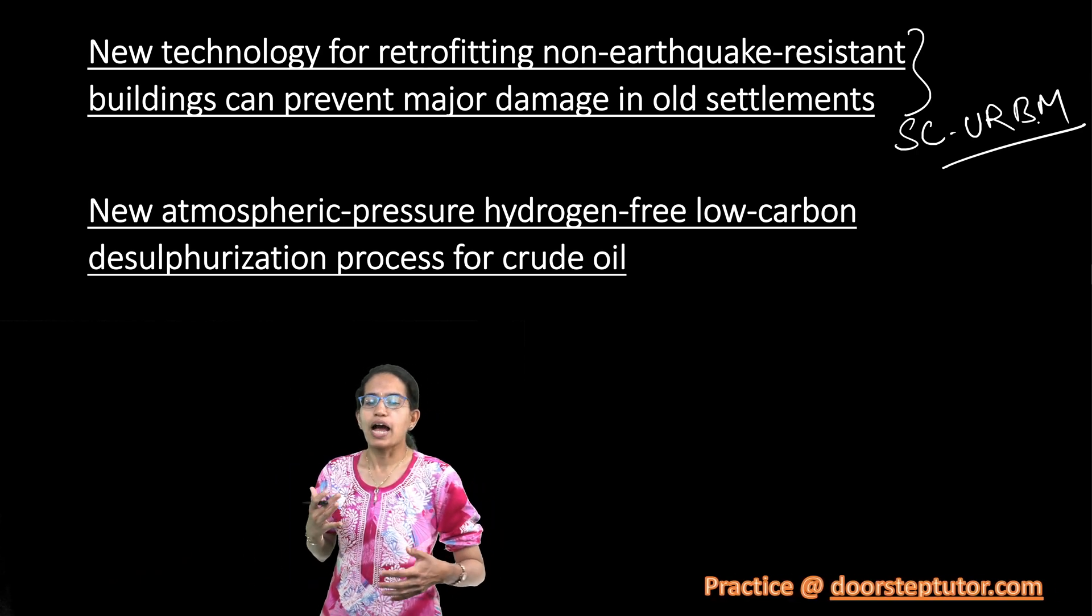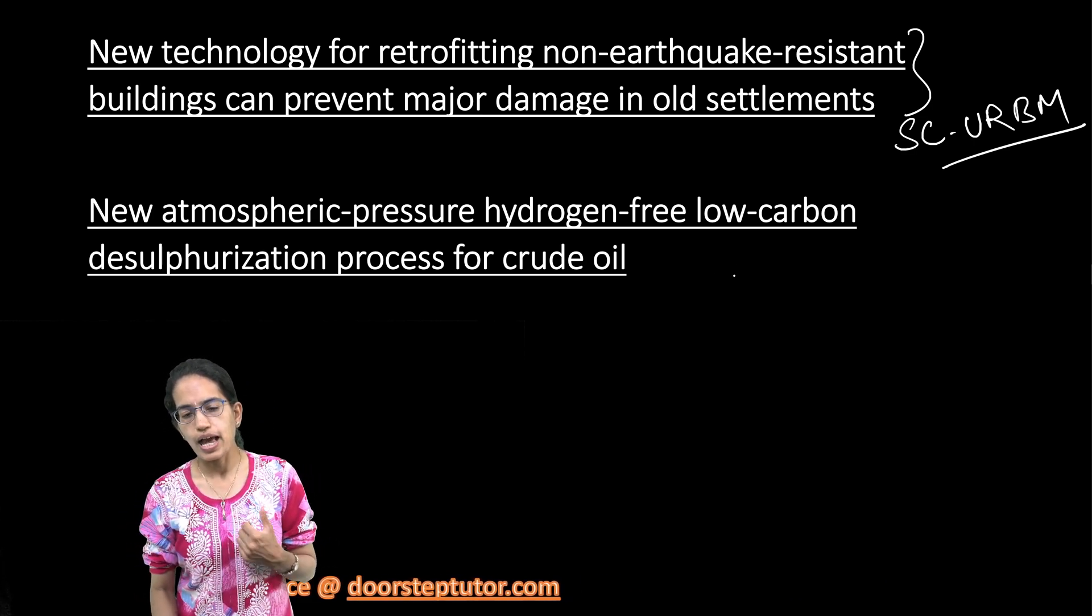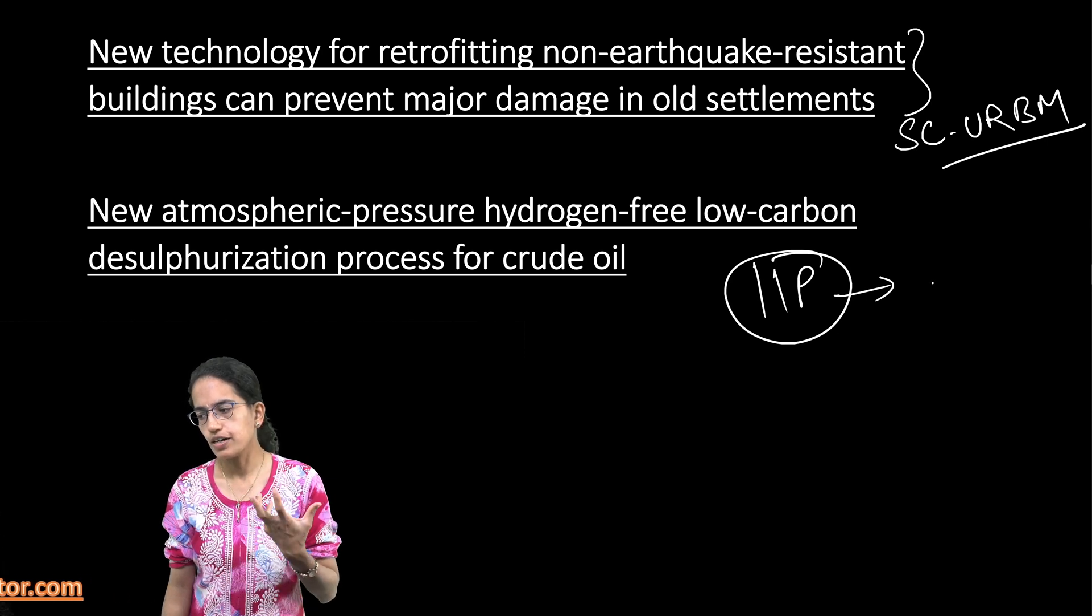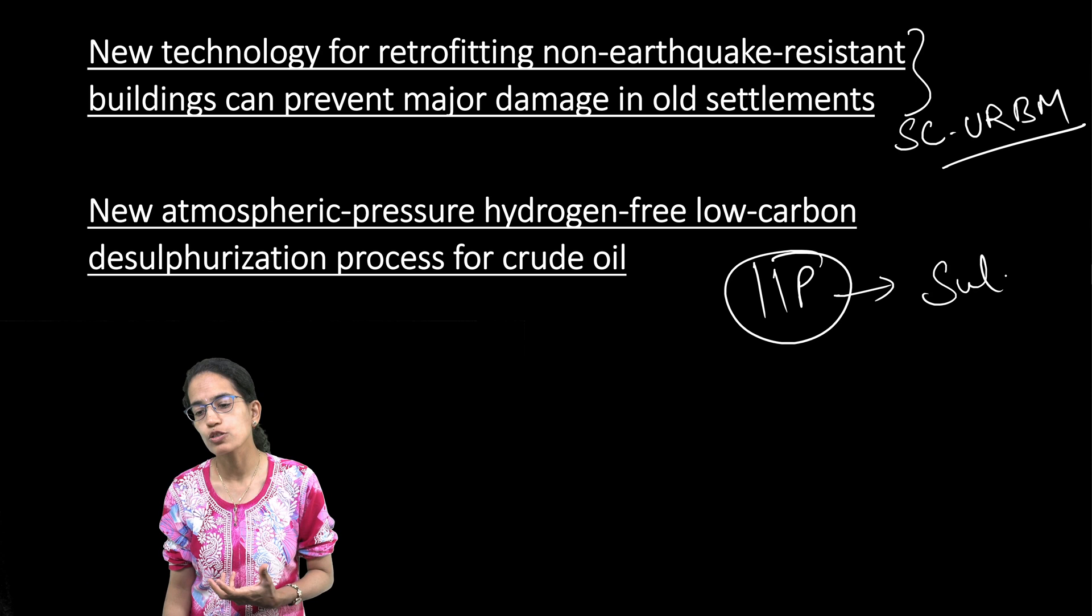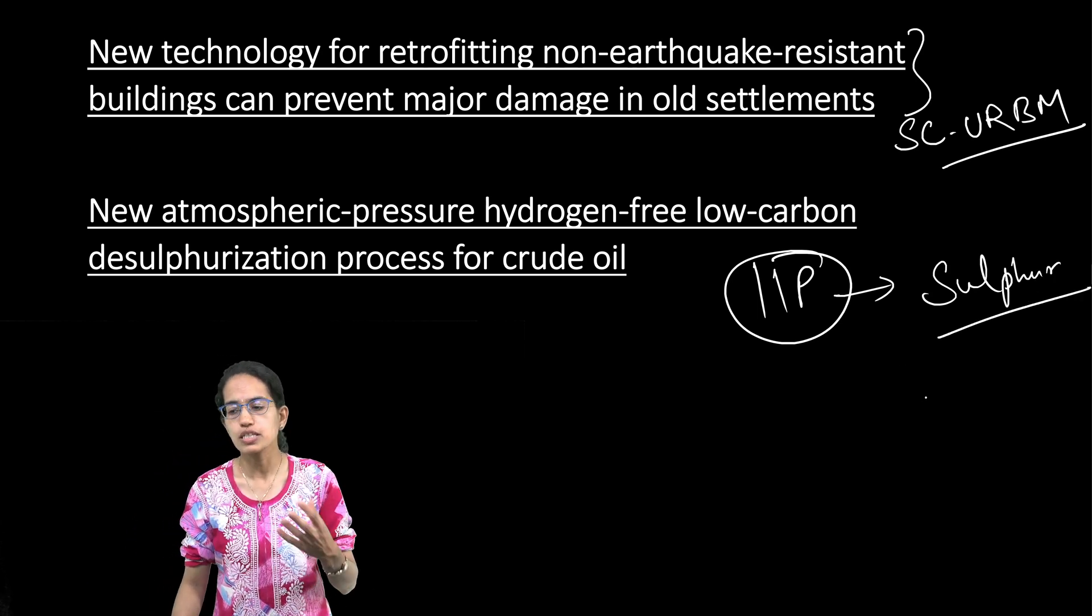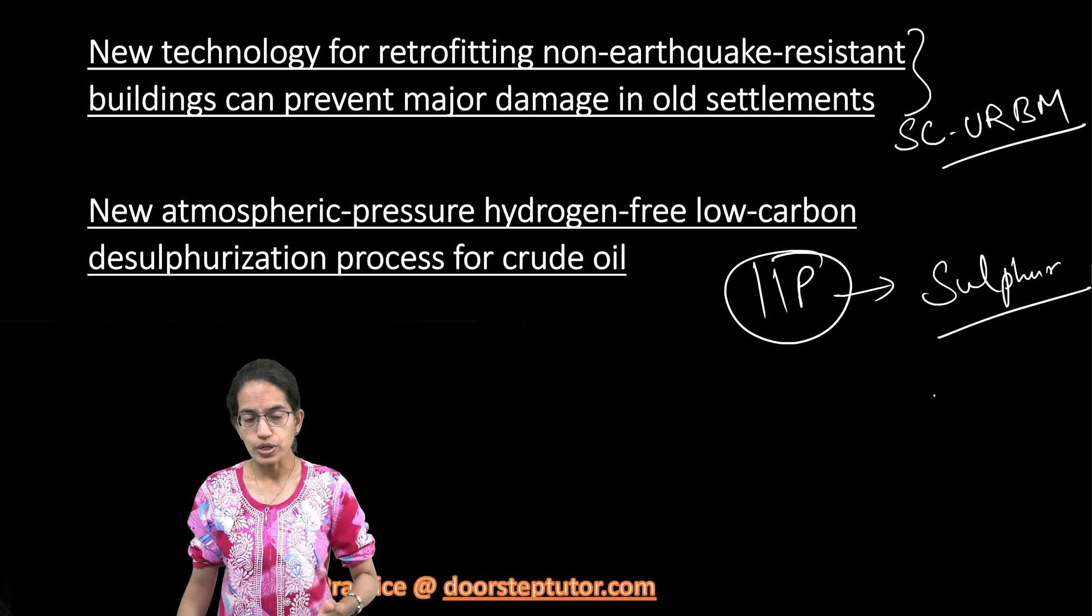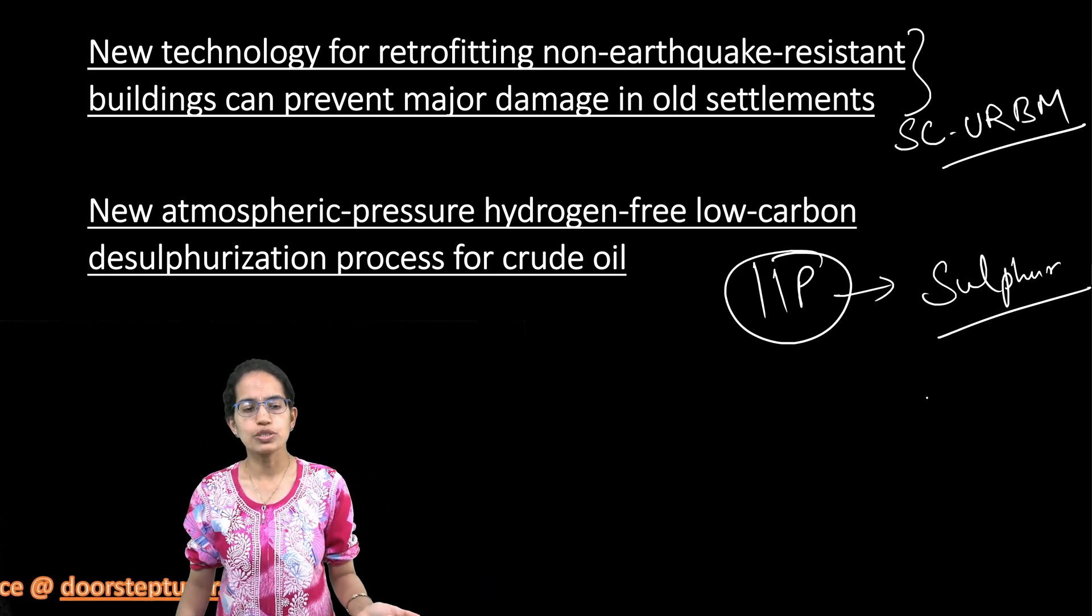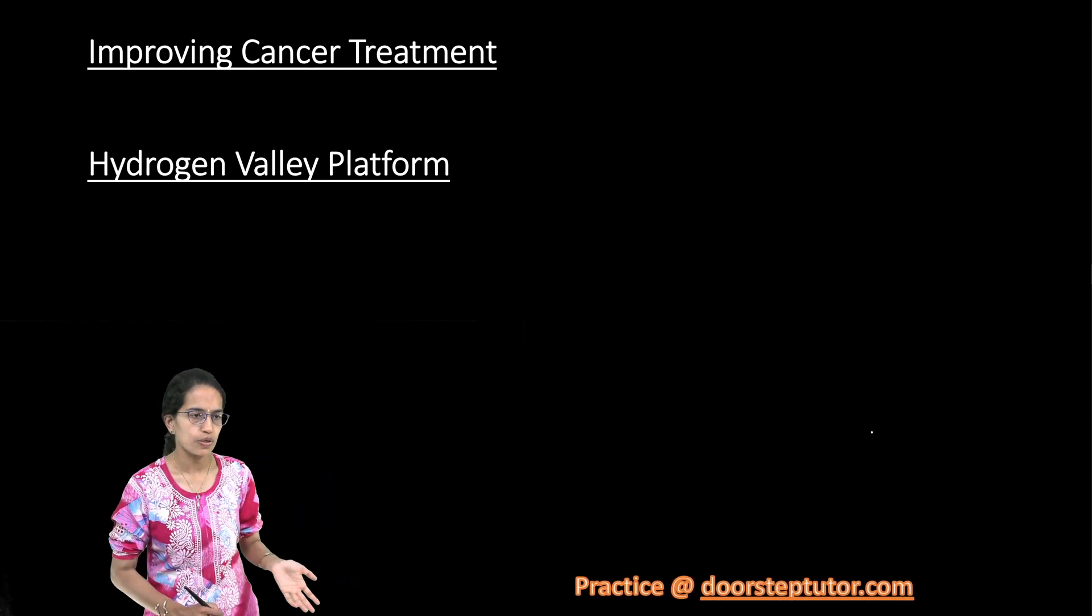The next is Hydrogen-Free Low Carbon Desulfurization Process for Crude Oil. As per the Indian Institute for Petroleum, the idea is so far there is lot of sulfur containing heterocyclic aromatic compounds which are released. These corrode the surface and therefore, they are leading to more expense and more carbon footprints. To reduce this, this hydrogen-free low carbon desulfurization method would prove to be a good alternative.